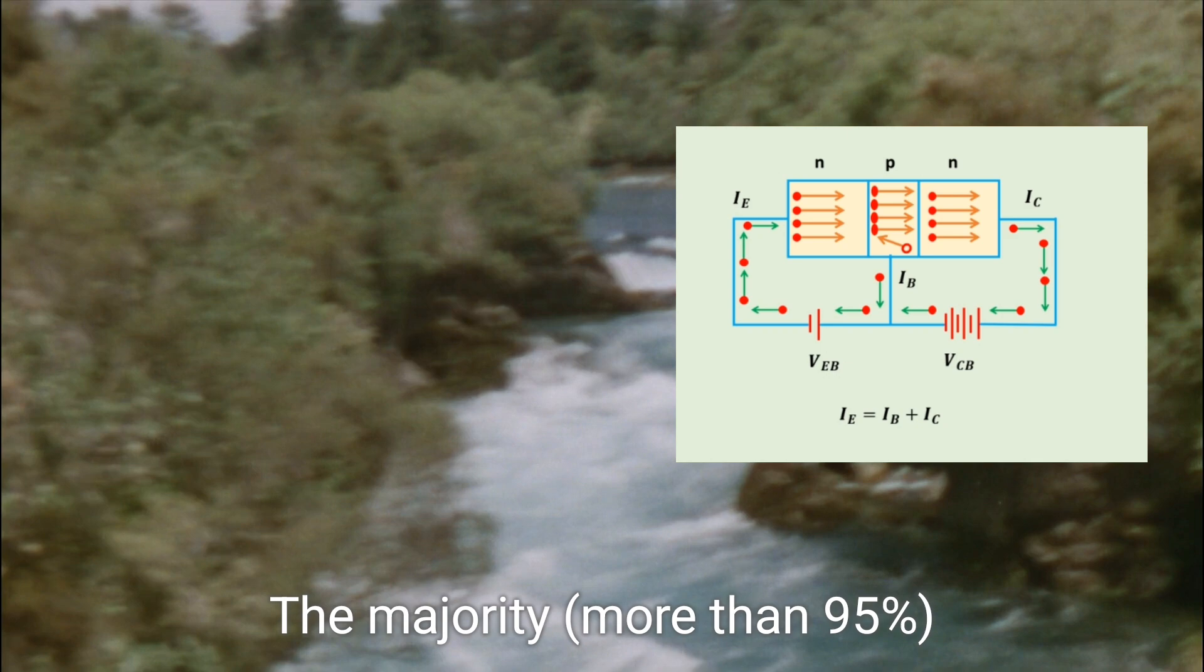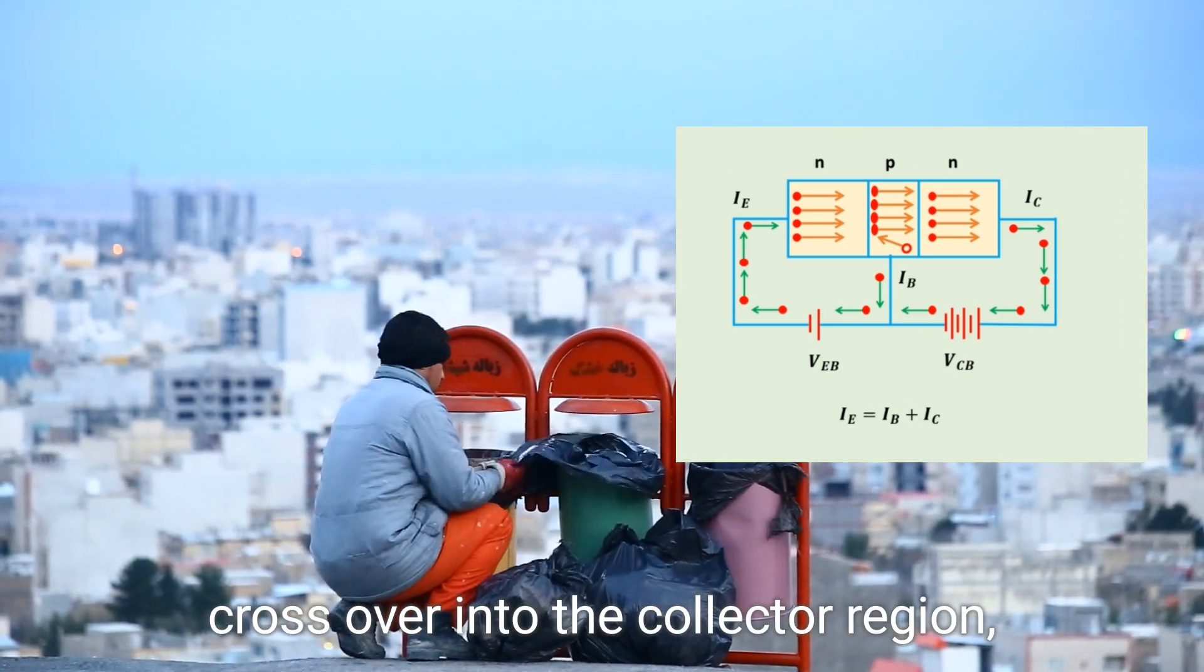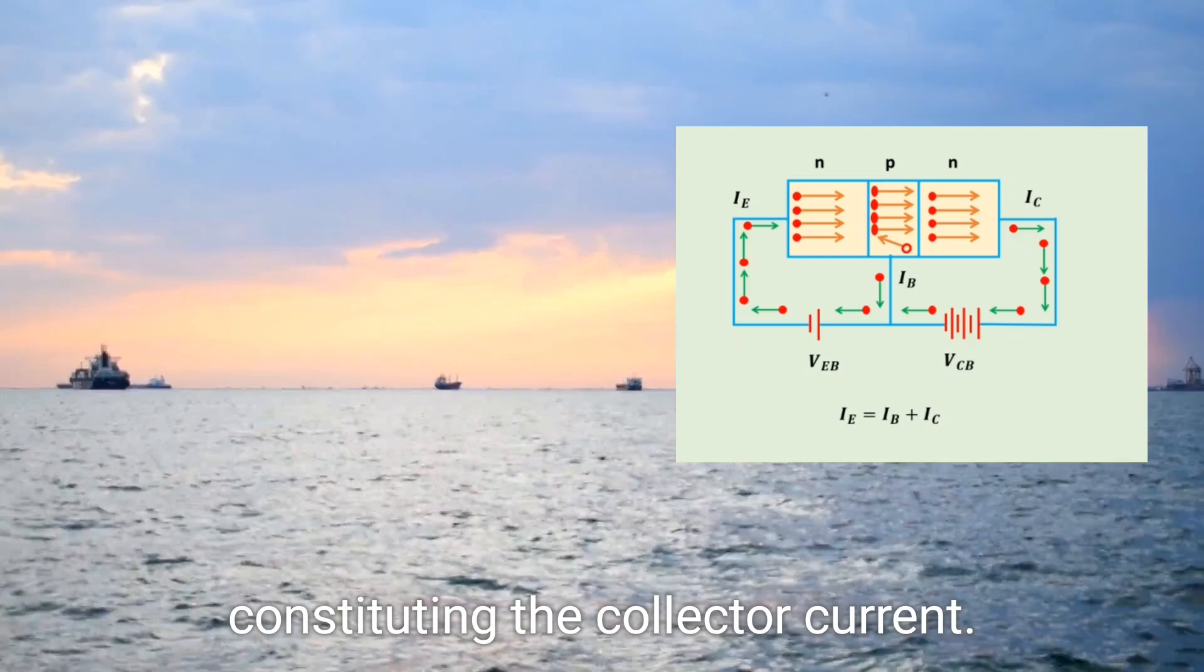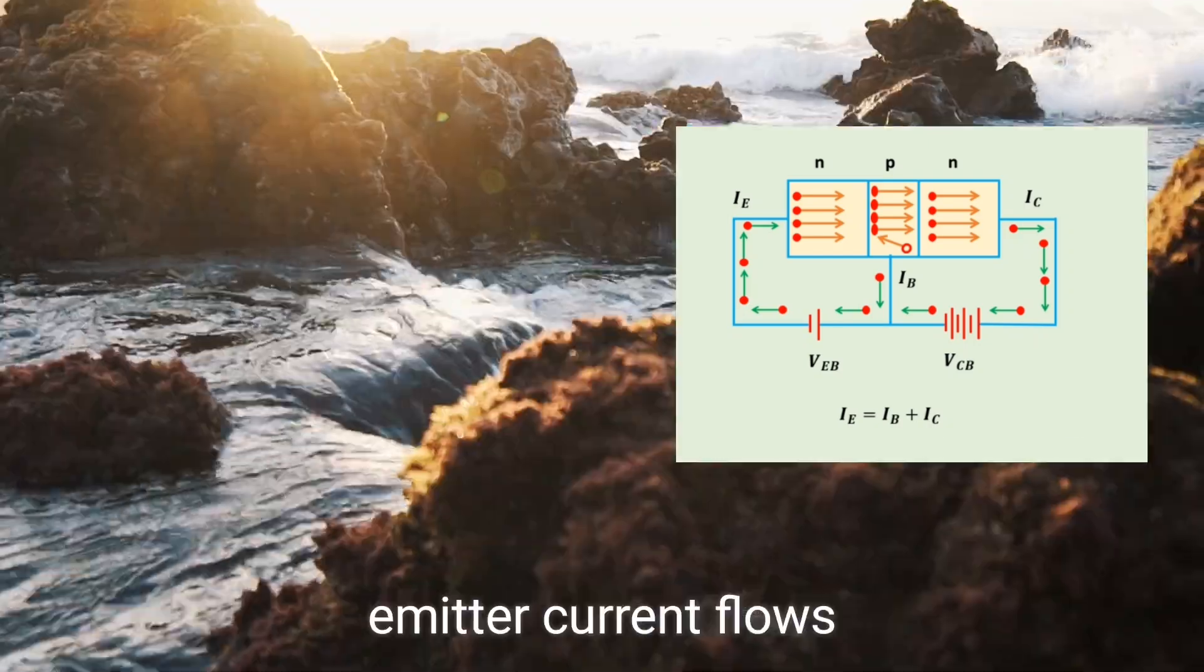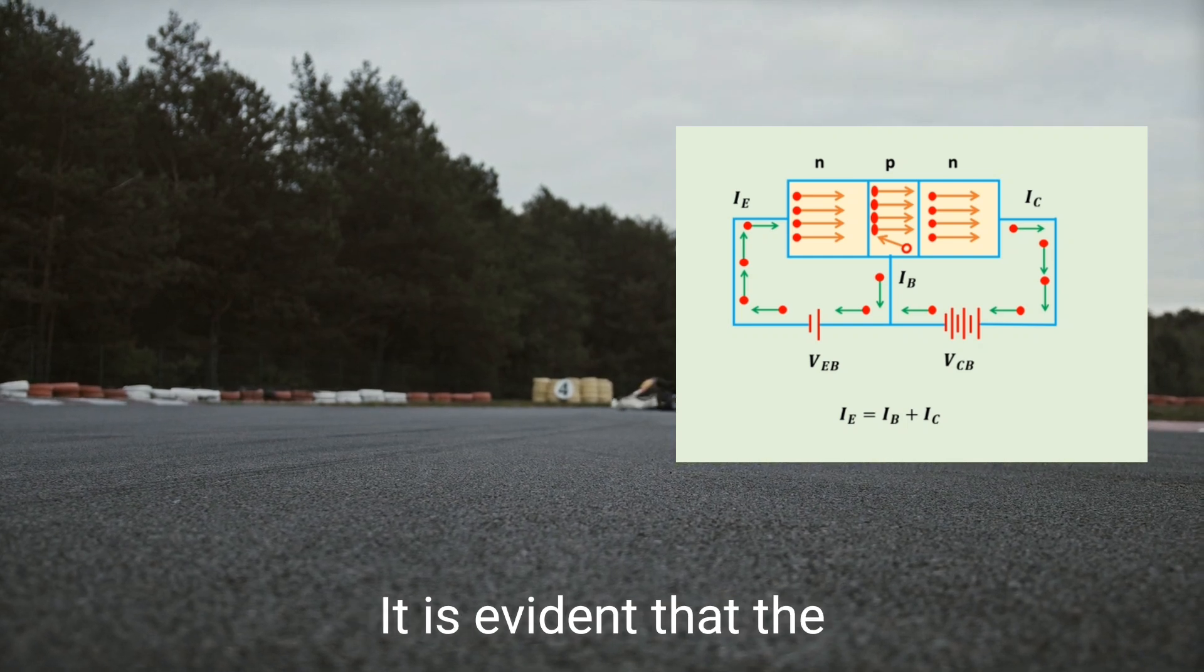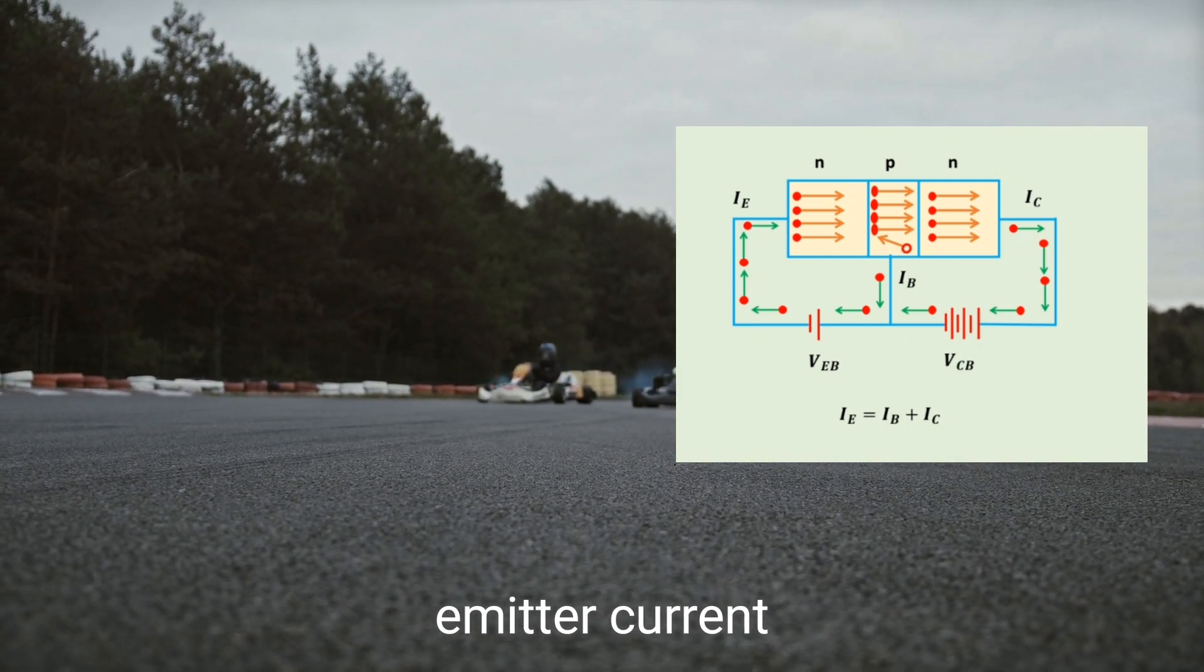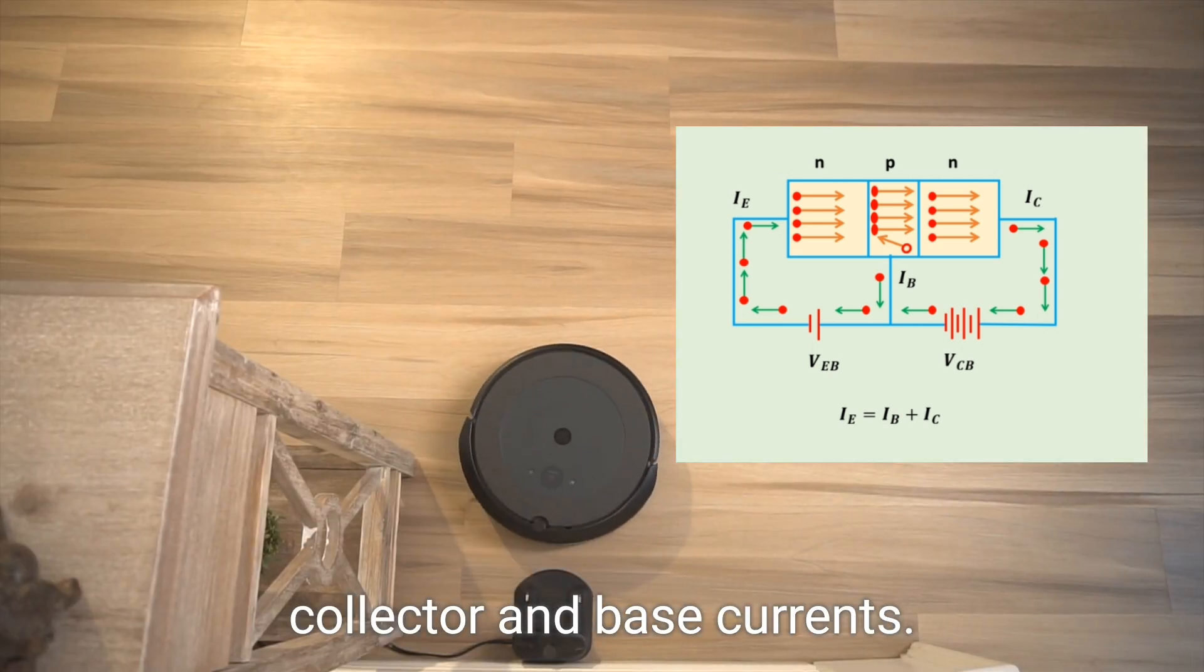The majority, more than 95%, cross over into the collector region, constituting the collector current. Thus, almost the entire emitter current flows in the collector circuit. It is evident that the emitter current is the sum of the collector and base currents.